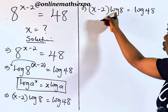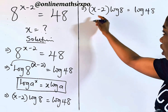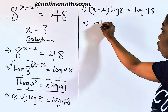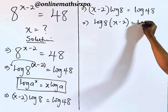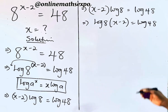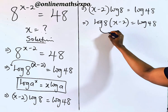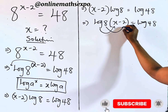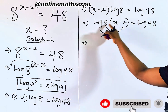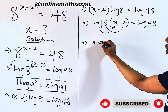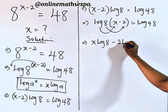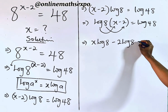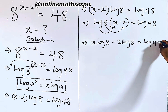Now we're going to distribute. This can be written as log of 8 times (x minus 2) equals log of 48. Distributing inside the bracket: x·log(8) minus 2·log(8) is equal to log of 48.